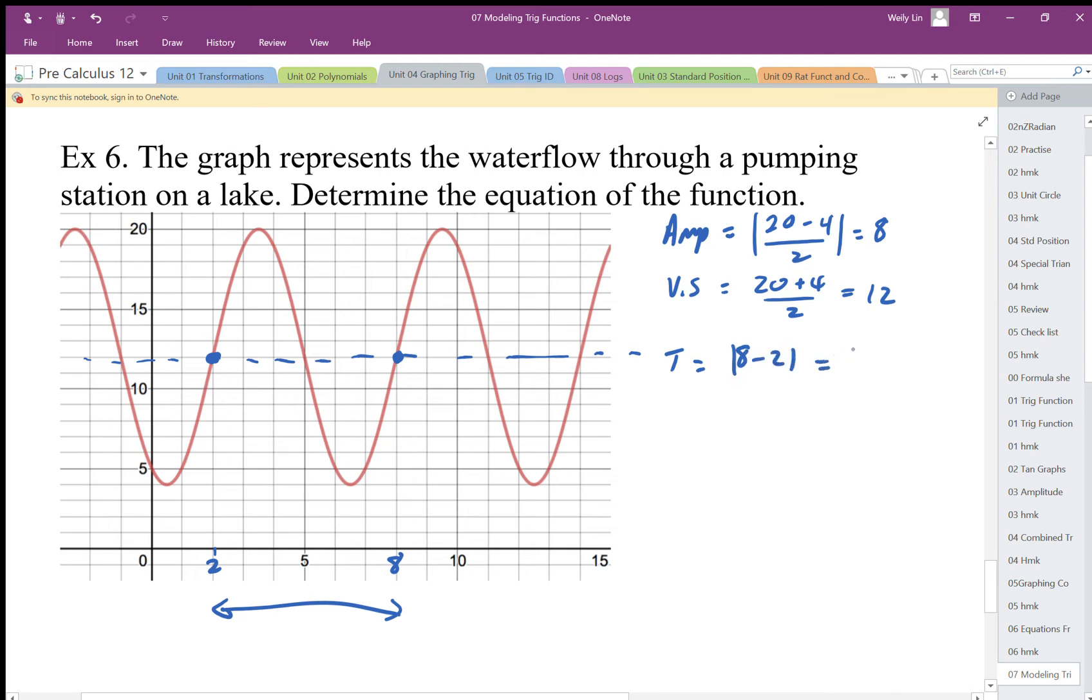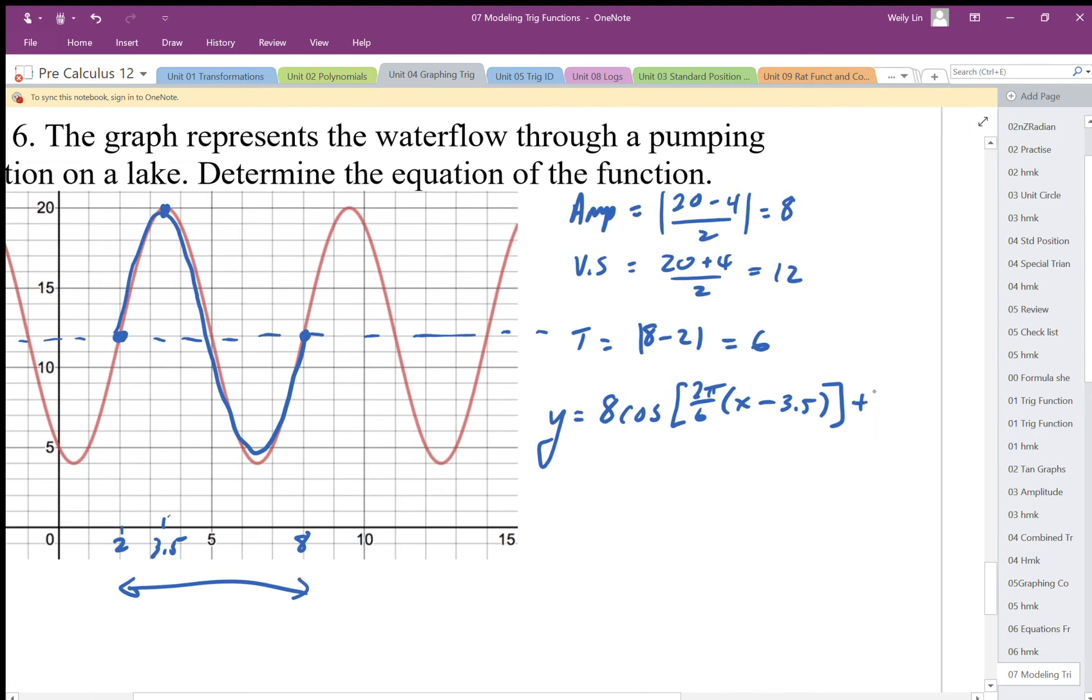That represents my whole period right, we're going from start to finish. So my period is 6. I'm going to use this coordinate here as my horizontal shift. That looks like it's 3.5. So the equation looks like this: y equals amplitude, I'm going to use cosine, 2π over 6, the horizontal shift was 3.5, and the middle was plus 12.